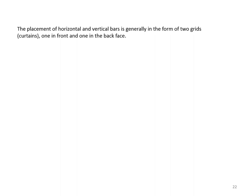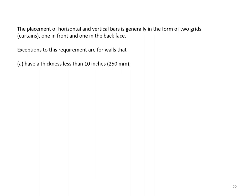The placement of horizontal and vertical bars is generally in the form of two grids or curtains—one in front and one in the back face. Exceptions apply for walls with a thickness less than 10 inches that are not used as retaining walls and are not basement walls.